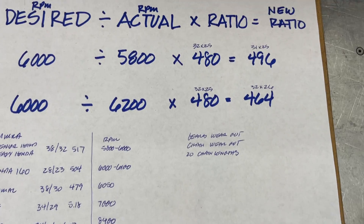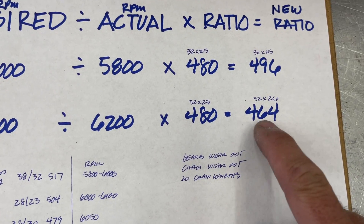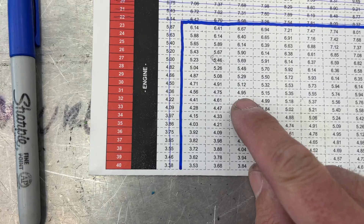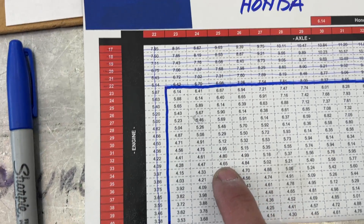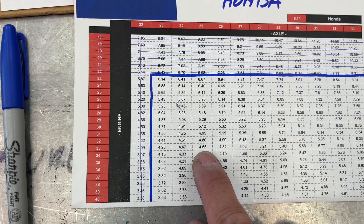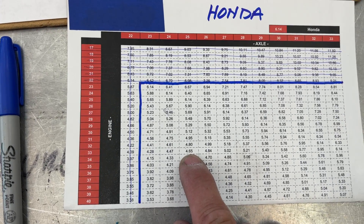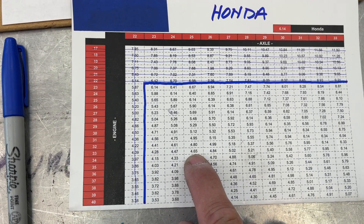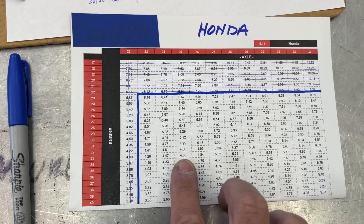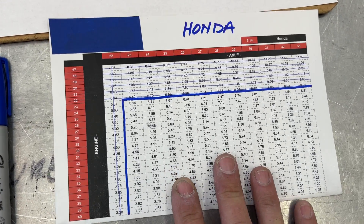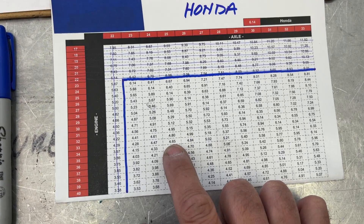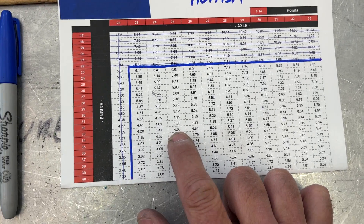In our other example, we're looking for a 464 from a 480. We got 480 right there, and right below it we got 465. It doesn't have to be exact — if you're one or two points off, it is not going to make that big of a difference. Usually on a gear change we're looking for a 10-point difference, a 15-point difference, or if we're way out, a 20-point difference.